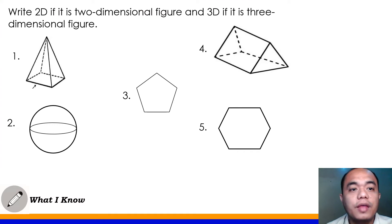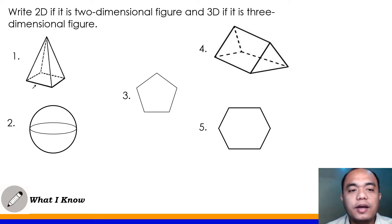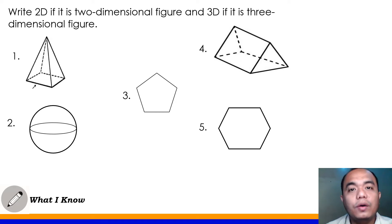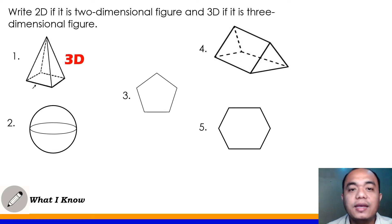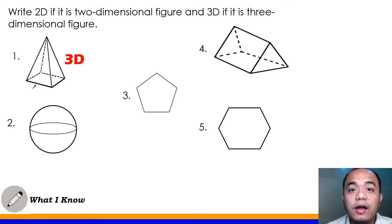Direction: Write 2D if it is a two-dimensional figure and 3D if it is a three-dimensional figure. Let's start with number 1. Is it 2D or 3D? Yes, that's 3D — a three-dimensional figure. And that is a rectangular pyramid.